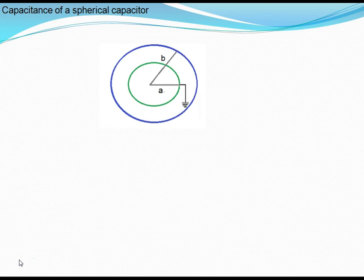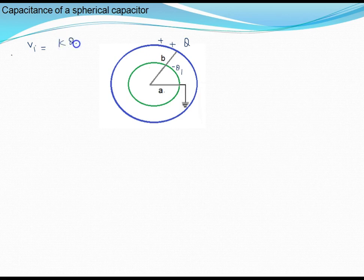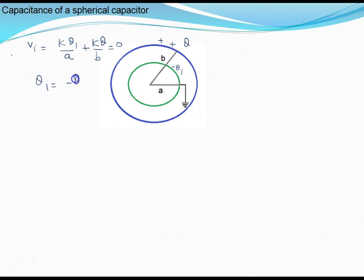In a new situation, the inner sphere is grounded. Suppose charge Q is given to the outer sphere. Since the inner sphere is at positive potential, the earth transfers a charge minus q1 to it. Writing the potential of the inner sphere: k·q1/a + k·Q/b = 0 since it is grounded. Solving, q1 = minus Qa/b.